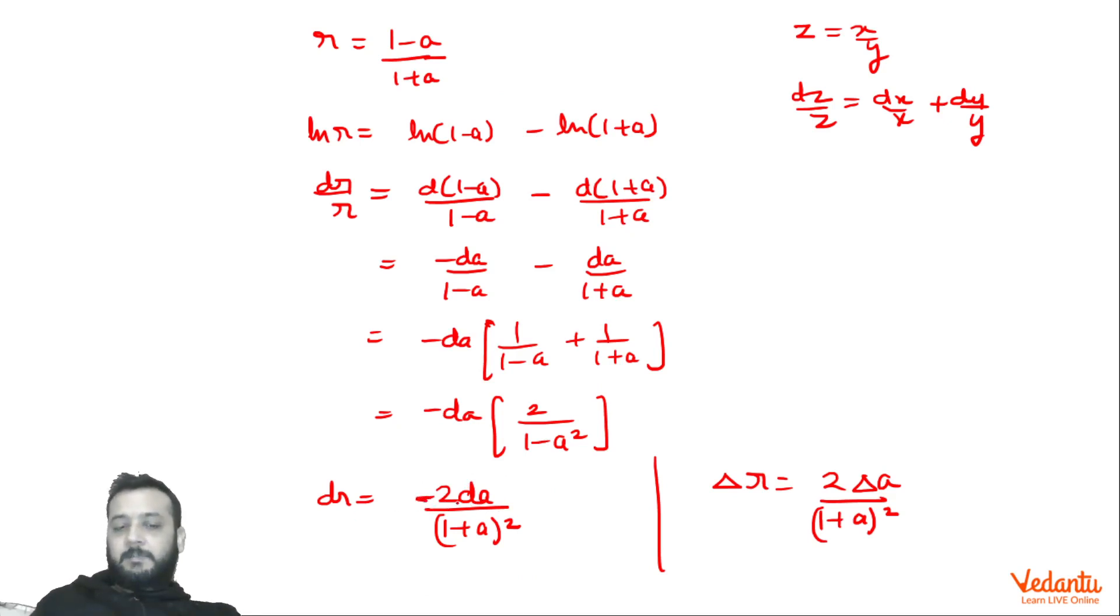This minus sign means that if a positive change comes in a, then a negative change will come in r. That is, if a increases, then r will decrease. But when we measure errors, the magnitude of errors, we basically have to calculate the magnitude of errors. Like when we measure any quantity, the length value comes as 5 plus minus 0.1, then 0.1 is the measurement error in the length.